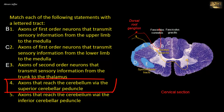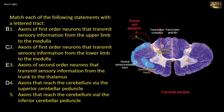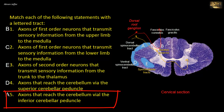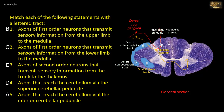Regarding statement 4: axons that reach the cerebellum via the superior cerebellar peduncle. This conforms with fibers in D. D is the ventral spinocerebellar tract, while the axons in tract A are those of the dorsal spinocerebellar tract. The dorsal spinocerebellar tract enters the cerebellum through the inferior cerebellar peduncle — this conforms with statement 5 — but the axons that enter the cerebellum via the superior cerebellar peduncle are the axons of the ventral spinocerebellar tract in D.